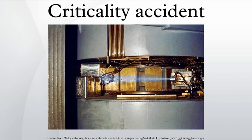A criticality accident is an uncontrolled nuclear chain reaction. It is sometimes referred to as a critical excursion or a critical power excursion, and represents the unintentional assembly of a critical mass of a given fissile material, such as enriched uranium or plutonium, in an unprotected environment. A critical or supercritical fission reaction generally only occurs inside reactor cores and occasionally within test environments. A criticality accident occurs when the same reaction is achieved unintentionally and in an unsafe environment.